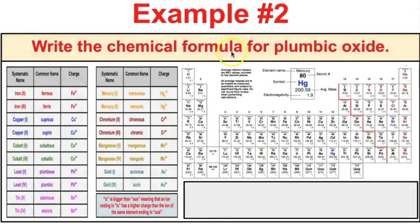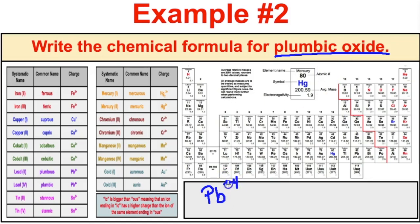For plumbic oxide, plumbic refers to lead, and because it ends in -ic it refers to the lead ion with the positive 4 charge. Oxide is O negative 2, so you need two of them. PbO₂ is the correct chemical formula for plumbic oxide.